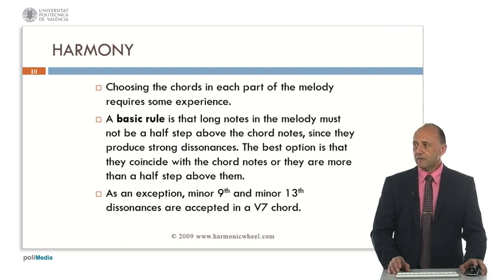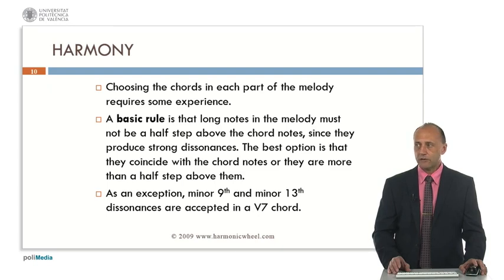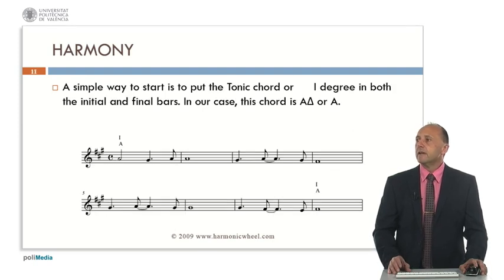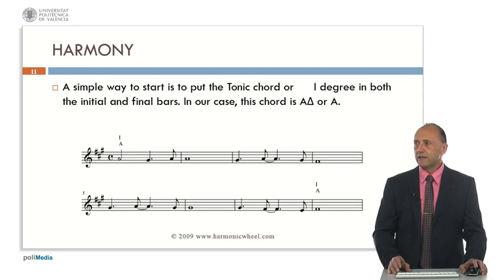Choosing the chords in each part of the melody requires some experience, of course. A basic rule is that long notes in the melody must not be a half-step above the chord notes, since they produce strong dissonances. The best option is that they coincide with the chord notes, or they are more than a half-step above them. As an exception, in a dominant seventh chord, the minor ninth and minor thirteenth dissonances are accepted. A simple way to start is to put the tonic chord, or first degree, in both the initial and final bars. In our case, this chord is A major seventh or A major.